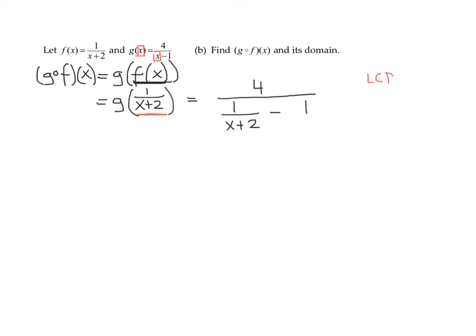So the LCD is fairly easy since I only have one denominator. It's going to be x plus 2. And all I have to do is I multiply the numerator by the LCD and both terms in the denominator by the LCD.